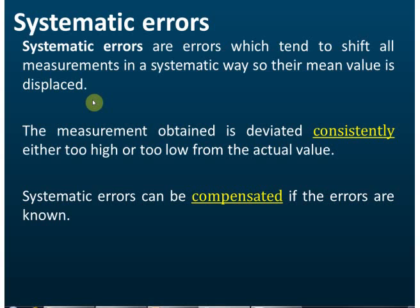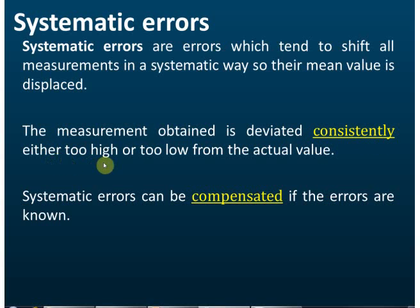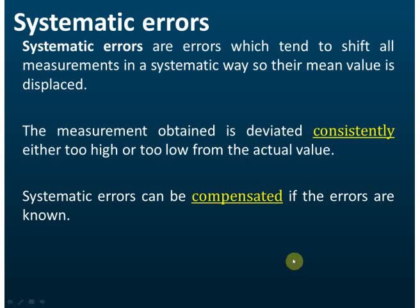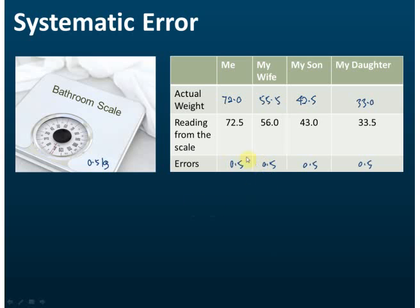So what is systematic error? Systematic errors are errors which tend to shift all measurements in a systematic way, so their mean value is displaced. The measurement obtained deviates consistently — either too high or too low — from the actual value, as we saw in our previous example.